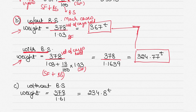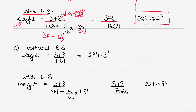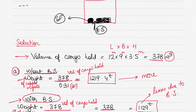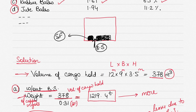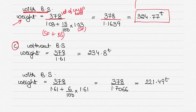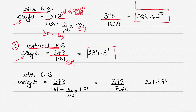I'll take one last example — rubber bales. The stowage factor and broken stowage percentage are given in the question. Without broken stowage: weight of cargo = volume of cargo hold ÷ stowage factor of rubber bales, which gives 234.8 tons. It's exactly the same procedure as before.